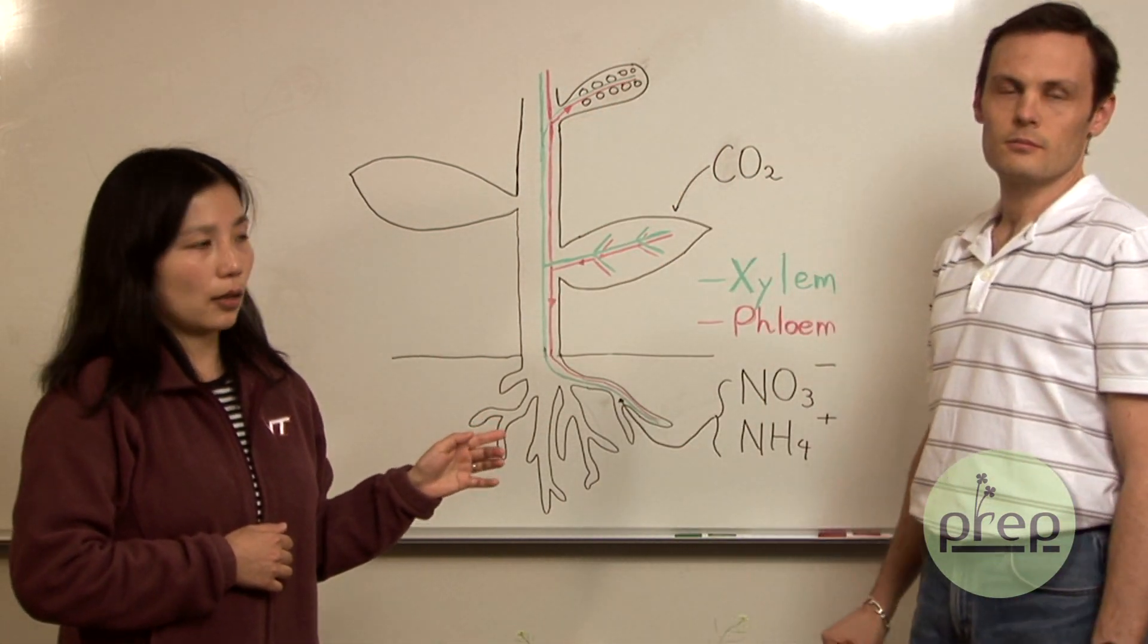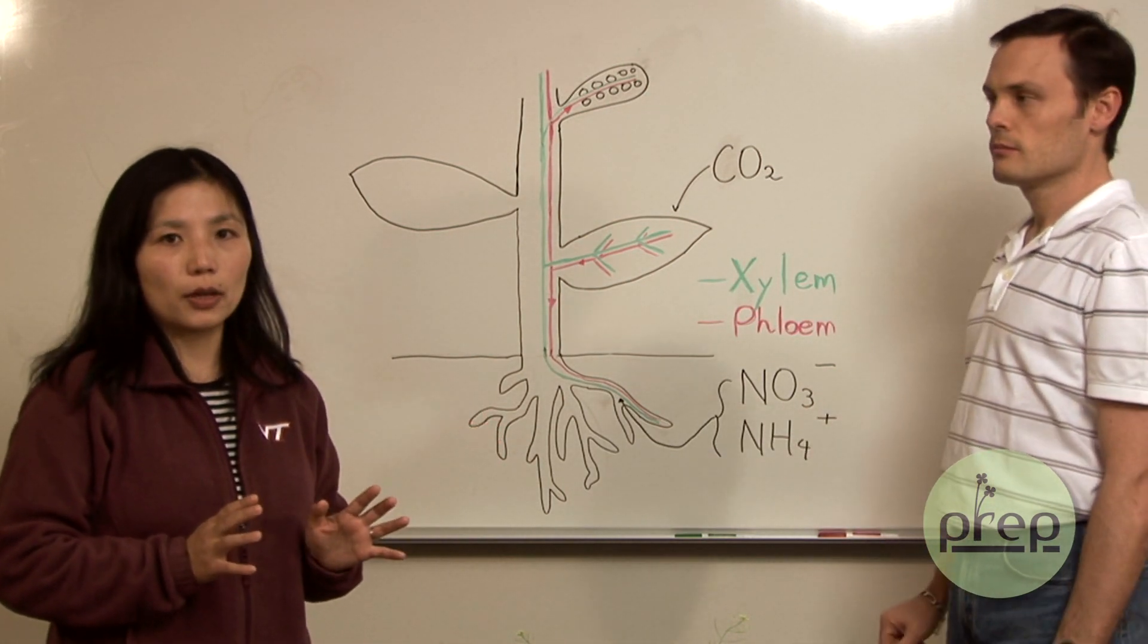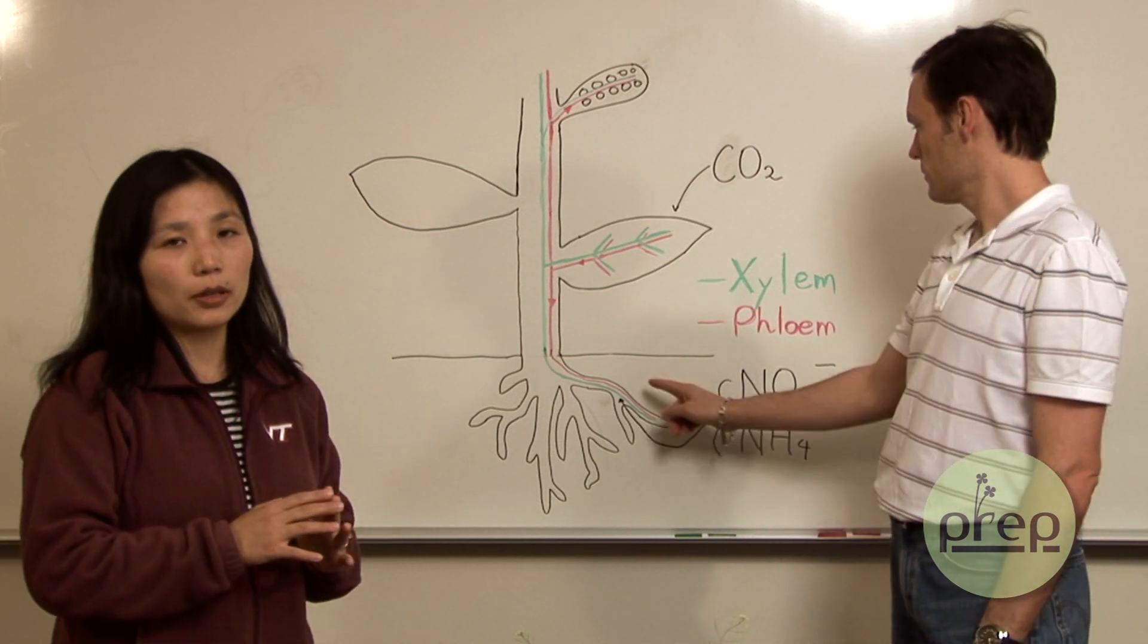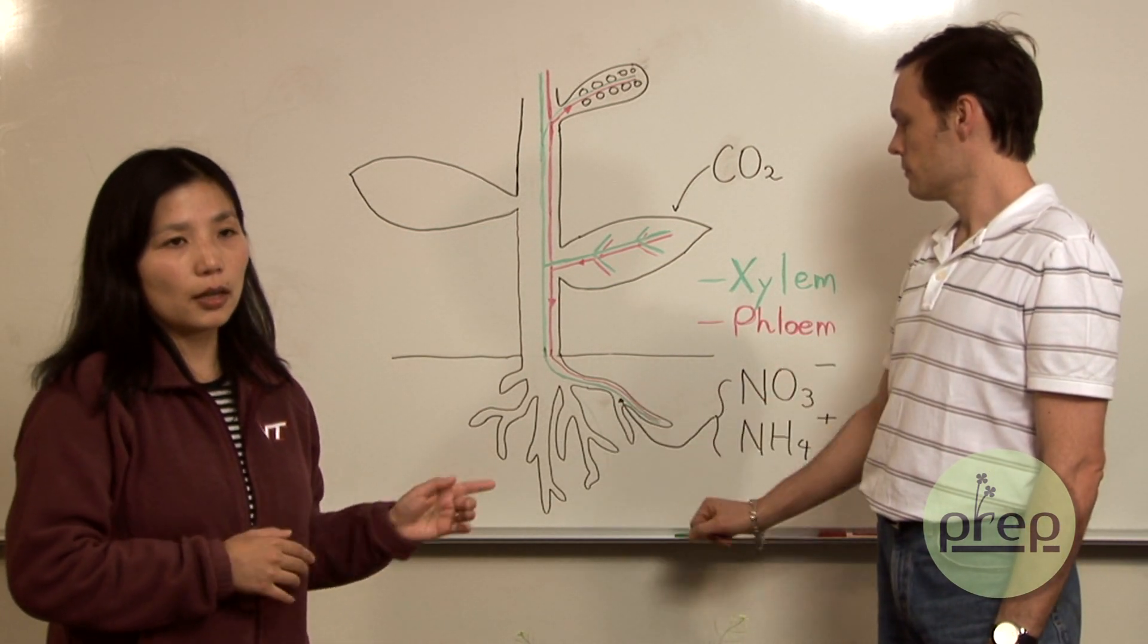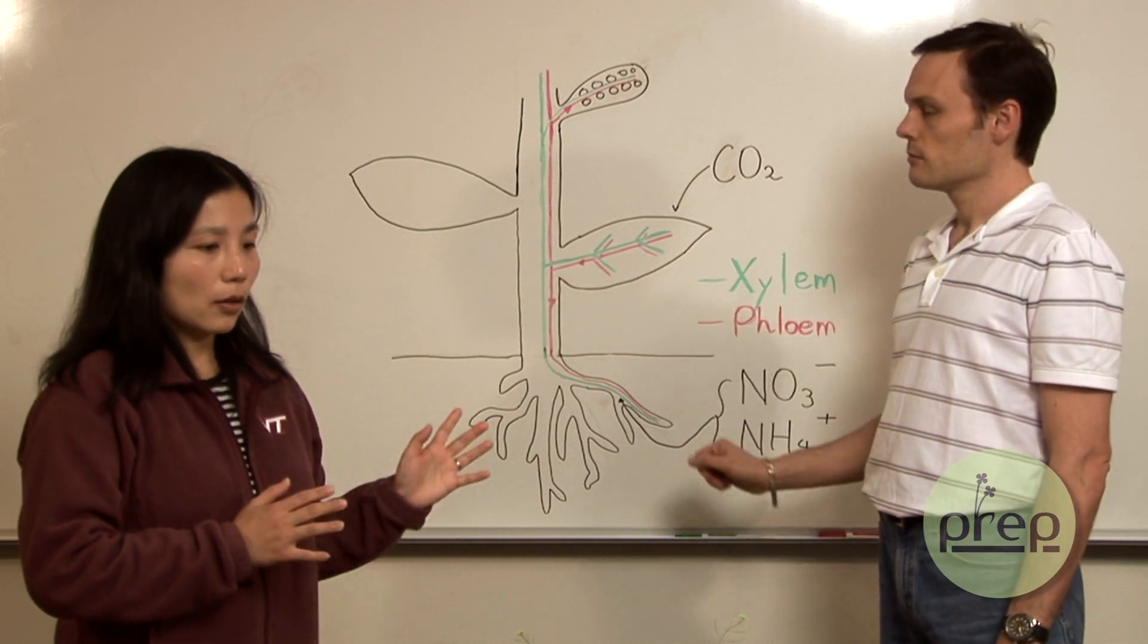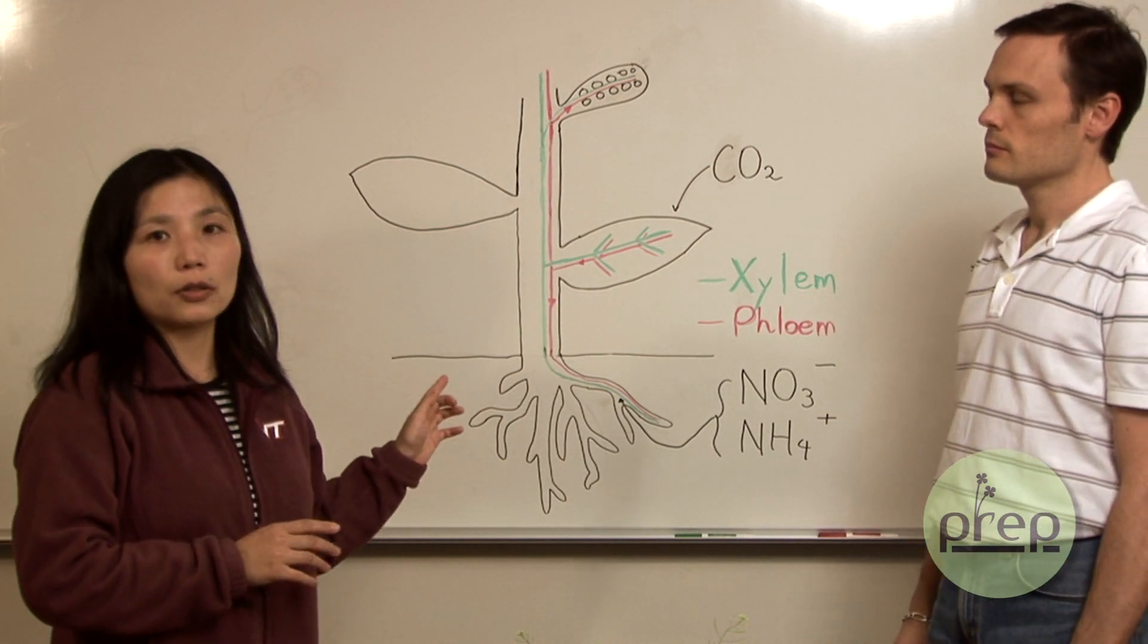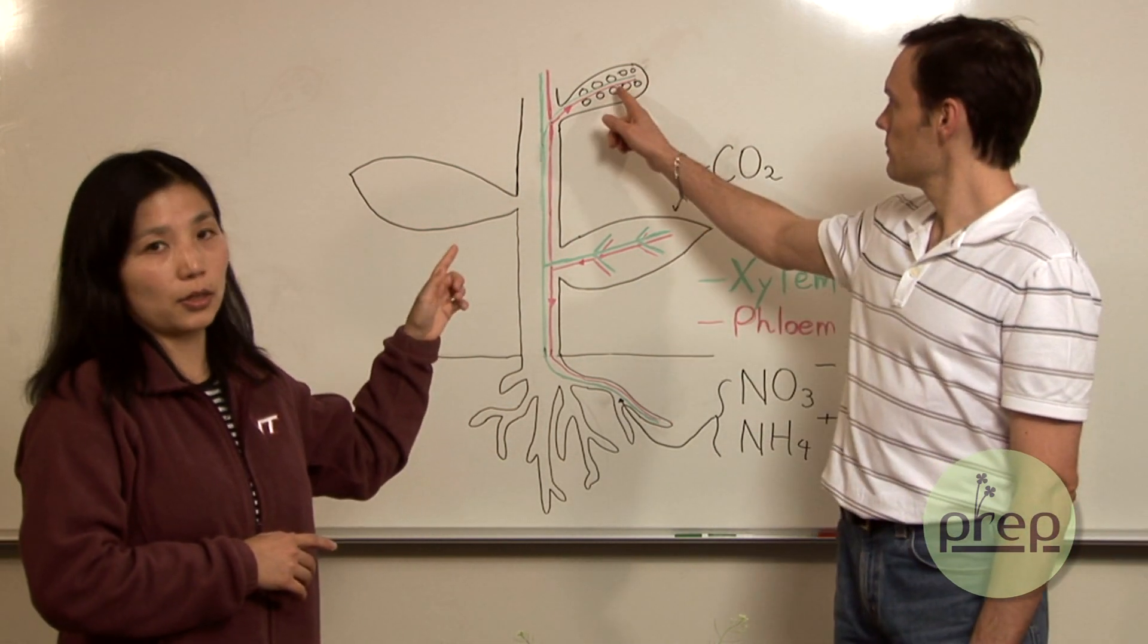On the other hand, ammonium is usually toxic to the cell, so what plants do is fix it in the root into amino acids. Then it's going to get transported through xylem. Therefore, xylem and phloem both contain amino acids and essentially they both work together to supply amino acids to the seeds.